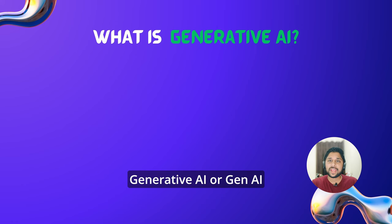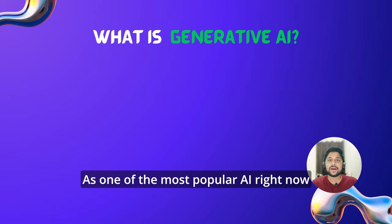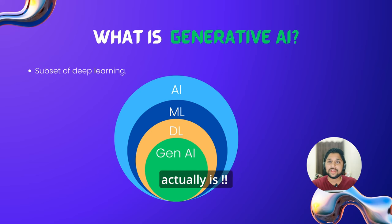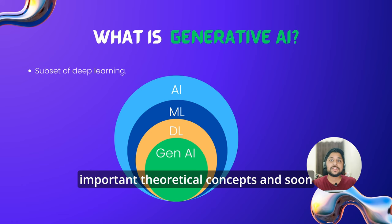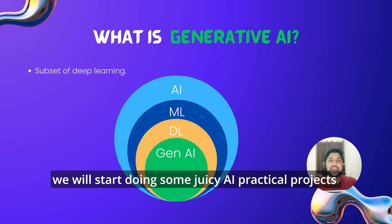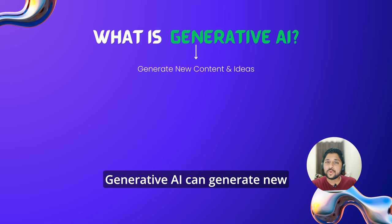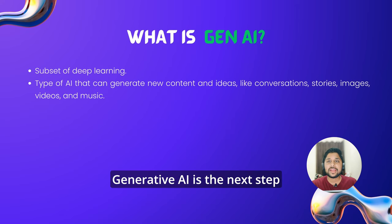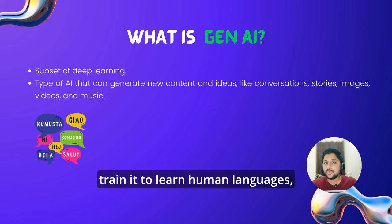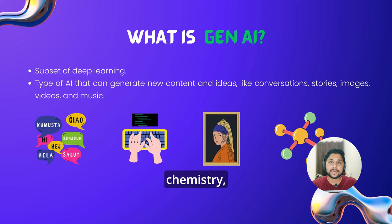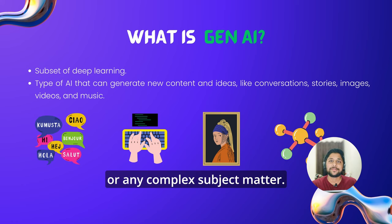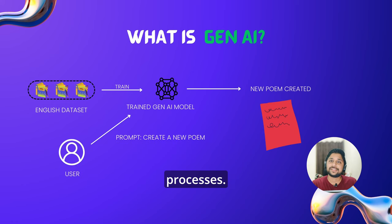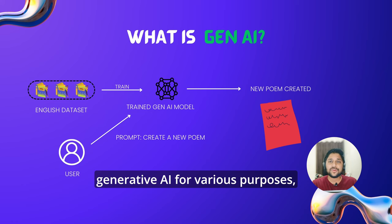You might have heard of the term Generative AI or Gen AI. As one of the most popular AI right now, ChatGPT is a Gen AI application. Gen AI is a subset of deep learning — you can see how deep artificial intelligence actually is. As clear from its name, Generative AI can generate new content and ideas like conversations, stories, images, videos and music. Generative AI is the next step in artificial intelligence. You can train it to learn human languages, programming languages, art, chemistry, biology or any complex subject matter. It reuses training data to solve new problems — for example, it can learn English vocabulary and create a poem from the words it processes. Your organization can use Generative AI for various purposes like chatbots, media creation, and product development and design.